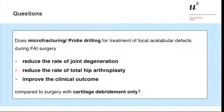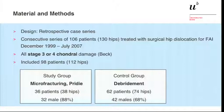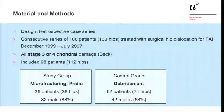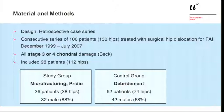Our study questions were: does microfracturing or Pridie drilling beneath a chondral flap change the outcome of the hip? Does it reduce the rate of joint degeneration? Does it reduce the rate of total hip arthroplasty? And does it improve clinical outcomes? We looked at patients treated with surgical hip dislocation for femoroacetabular impingement with documented chondral flaps between 1999 and 2007, all with stage 3 or 4 chondral damage. The study group received Pridie drilling or microfracturing beneath the chondral flap; the control group had the cartilage flap replaced without drilling, just impingement surgery.